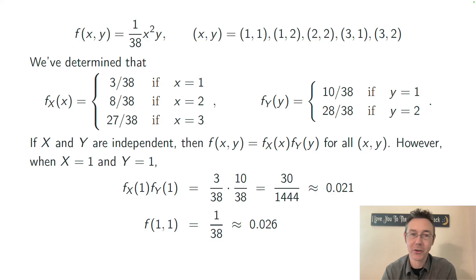For instance, starting with the very first one, when x is 1 and y is 1, multiplying the two marginal probability mass functions gives 0.021, and the value of the joint probability mass function f(1,1) is 1/38 or 0.026. These two are not the same, and therefore these random variables are not independent of one another.